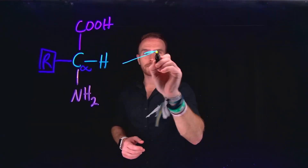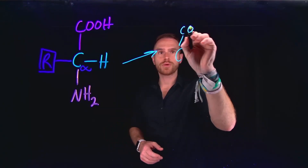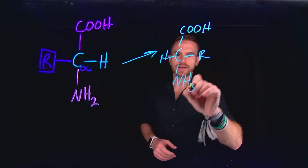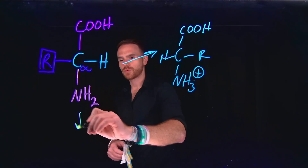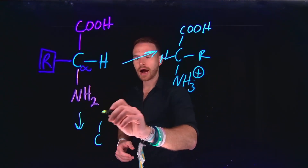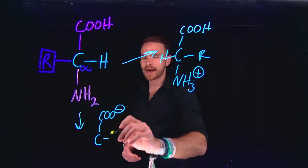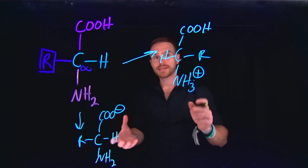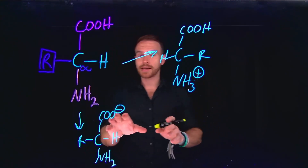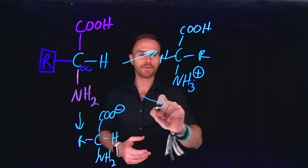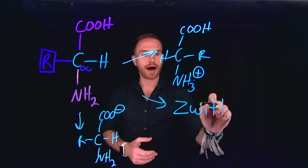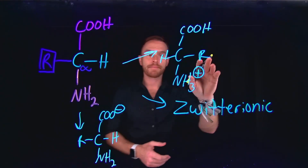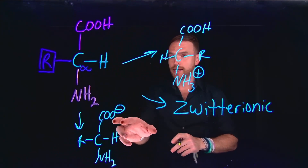At low pHs, you are under acidic conditions. Therefore, we would expect that the amino group would also be protonated, leaving behind an NH3+. At high pHs, that means basic conditions. Under basic conditions, the carboxylic acid group would be deprotonated. Since these functional groups can exist as protonated and deprotonated, this is an example of a type of compound which we call zwitterionic, meaning you have a compound capable of existing in multiple ionic states because we can have a protonated amino group and a deprotonated carboxylic acid.